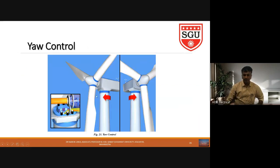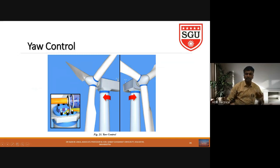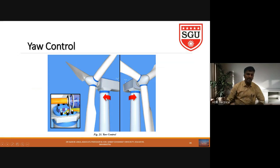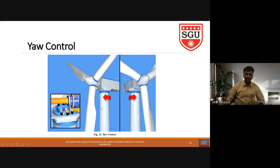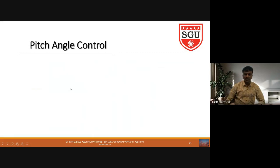For yaw control, inside the tower there are many servo motors. As seen in the inner diagram, the servo motors are available. Based on the wind direction sensed from the anemometer, we come to know which direction the wind is flowing. Accordingly, this red arrow shows how we can turn the nacelle — either to the left side or towards the right side. As electrical engineers, we can focus on the servo motor control efficiency.